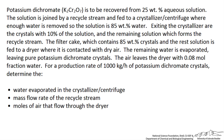We are trying to produce 1000 kg per hour of potassium dichromate. Given our basis of 1000 kg per hour of potassium dichromate crystals exiting the dryer, we want to determine: 1) the water evaporated in the crystallizer centrifuge, 2) the mass flow rate of the recycle stream, and lastly 3) the moles of air that flow through the dryer.